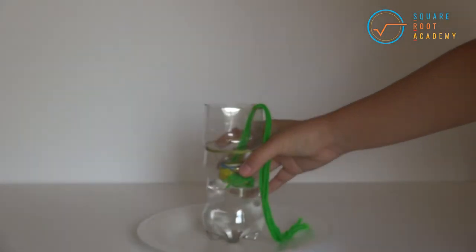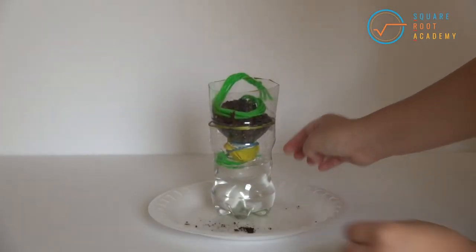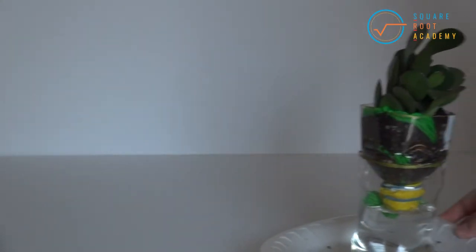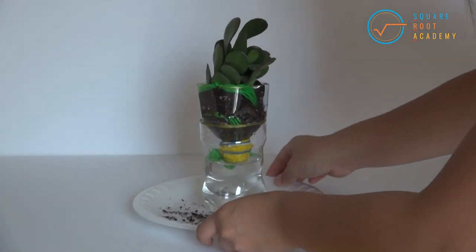Place your planter on the paper plate and fill the top section of the planter halfway with soil. Take the tail of the yarn and coil it onto the top of the soil you just added. Place the plant into the planter, filling the sides with extra soil if needed.